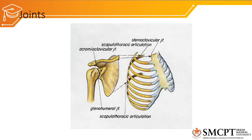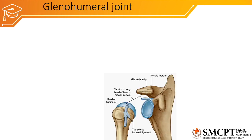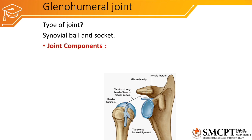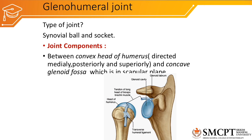The four joints forming the shoulder complex are the acromioclavicular joint, glenohumeral joint, scapulothoracic joint, and sternoclavicular joint. The glenohumeral joint is one of the most mobile joints of the upper limb. It is a synovial ball and socket type of joint. The joint components are the convex head of the humerus, which is directed medially, posteriorly, and superiorly, and the concave glenoid fossa.